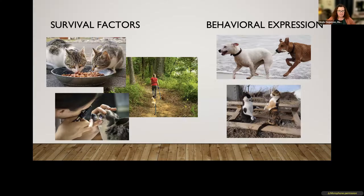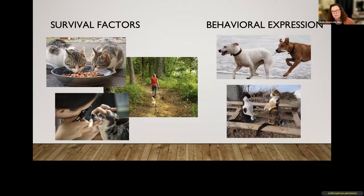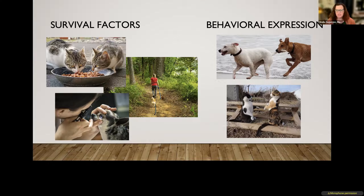Our survival factors are things like nutrition — you see those cats eating in the upper left — environmental factors, so things in our environment that can either improve or harm our welfare, and then our physical health, which certainly has a big impact on our well-being. Those are the first three domains. The fourth domain is our behavioral expression, and whether it's something like playing with a companion or something that is not positive — like the cats in the lower right there who look like they're about to get into a fight — having the ability to express a wide range of natural behaviors can certainly help to improve welfare, though pieces of it can detract from welfare as well.